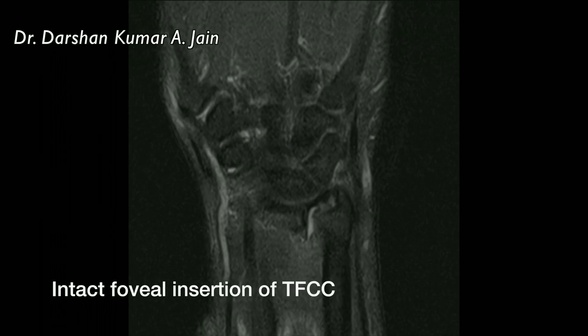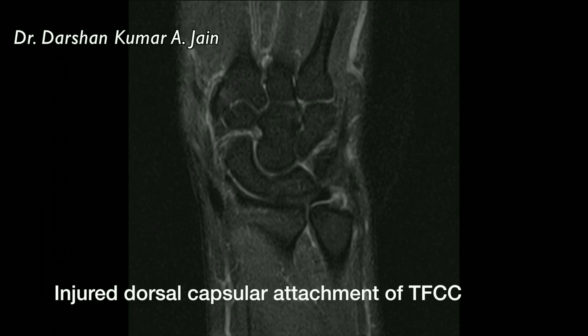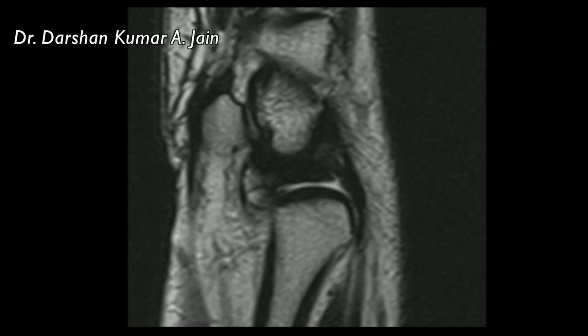An MRI here showing an intact foveal insertion with the injured dorsal capsule attachment of the TFCC, which is much better seen in a sagittal view like this.